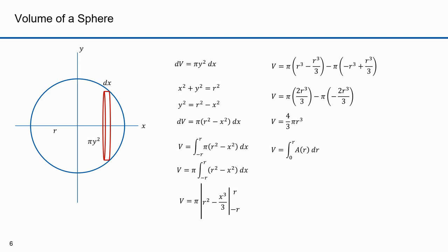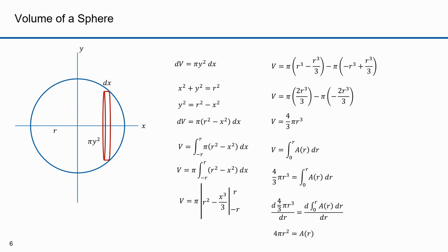The volume is also the integral of the surface area, integrating from 0 to r — starting with an infinitesimally small sphere and expanding it to radius r. I've computed the volume as 4/3 πr³. The fundamental theorem of calculus tells us the derivative of the integral is the underlying function, so the derivative of 4/3 πr³ is 4πr², which is the formula for the surface area of a sphere.